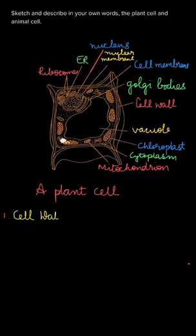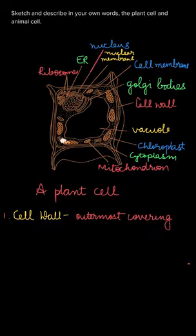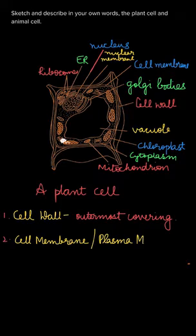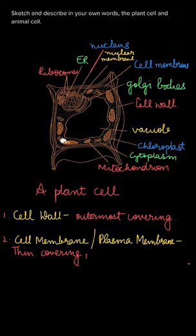Let us discuss all the cell components in detail. First is cell wall. Cell wall is the outermost covering of a cell and it is present only in the plant cell. Cell membrane, or plasma membrane, is a thin covering that is extremely delicate and flexible.